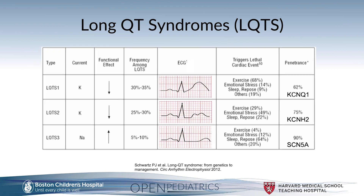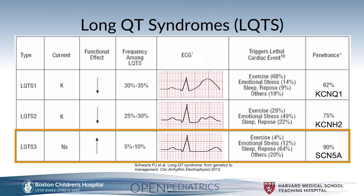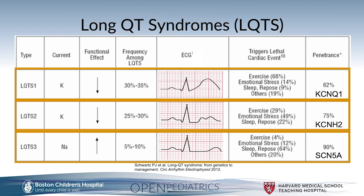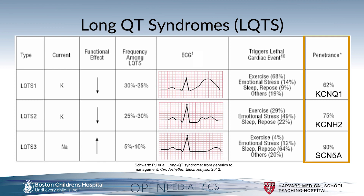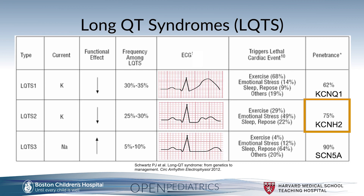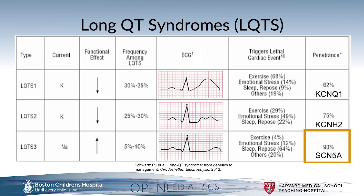The three most common types of long QT syndrome are types 1, 2, and 3. Long QT syndrome type 1 is due to a KCNQ1 mutation, long QT type 2 is due to a KCNH2 mutation, and long QT type 3 is due to an SCN5A mutation. SCN5A is also seen in Brugada syndrome. The difference is that in Brugada syndrome the SCN5A sodium channel mutation is a loss of function, whereas long QT type 3 is a gain of function in the SCN5A gene. Types 1 and 2 are due to a loss of function in the potassium ion channel genes KCNQ1 and KCNH2, respectively.